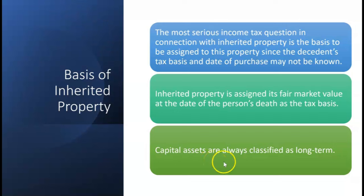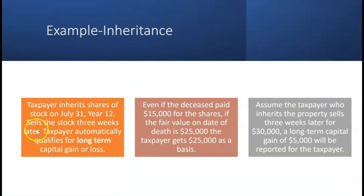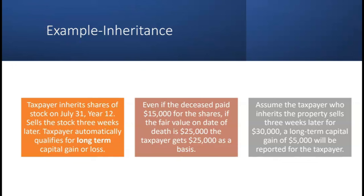If it's a capital asset like stocks, bonds, or real estate, it's always classified as long-term. Here's our first example: a taxpayer inherits shares of stock on July 31st, Year 12, and sells the stock three weeks later. The taxpayer automatically qualifies for long-term capital gain or loss even though they only held it for three weeks. Even if the deceased paid $15,000 for the shares, if the fair value on the date of death is $25,000, the taxpayer gets $25,000 as a stepped-up basis.